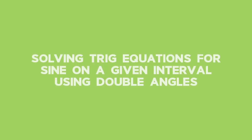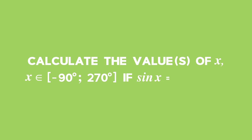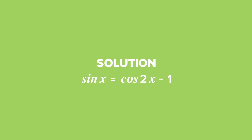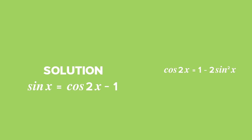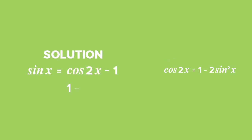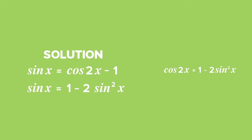Example 2: Solving trig equations for sine on a given interval using double angles. Calculate the value or values of x in the interval from negative 90 degrees up to and including 270 degrees, if sine x equals cos 2x minus 1. In its current form we cannot solve the equation, so we simplify using the double angle formula for cos 2x. On the right-hand side, rewrite cos 2x as 1 minus 2 sin squared x, since there is already a sine x on the left-hand side. This gives sine x equals 1 minus 2 sin squared x minus 1, leaving negative 2 sin squared x on the right.